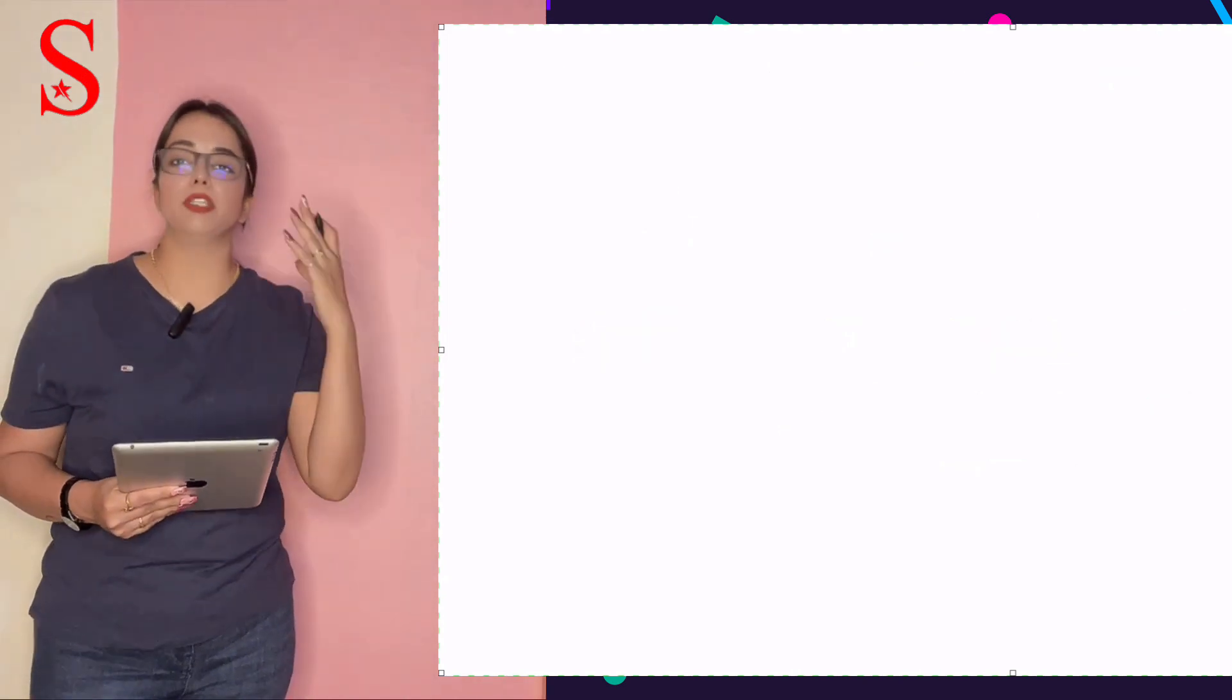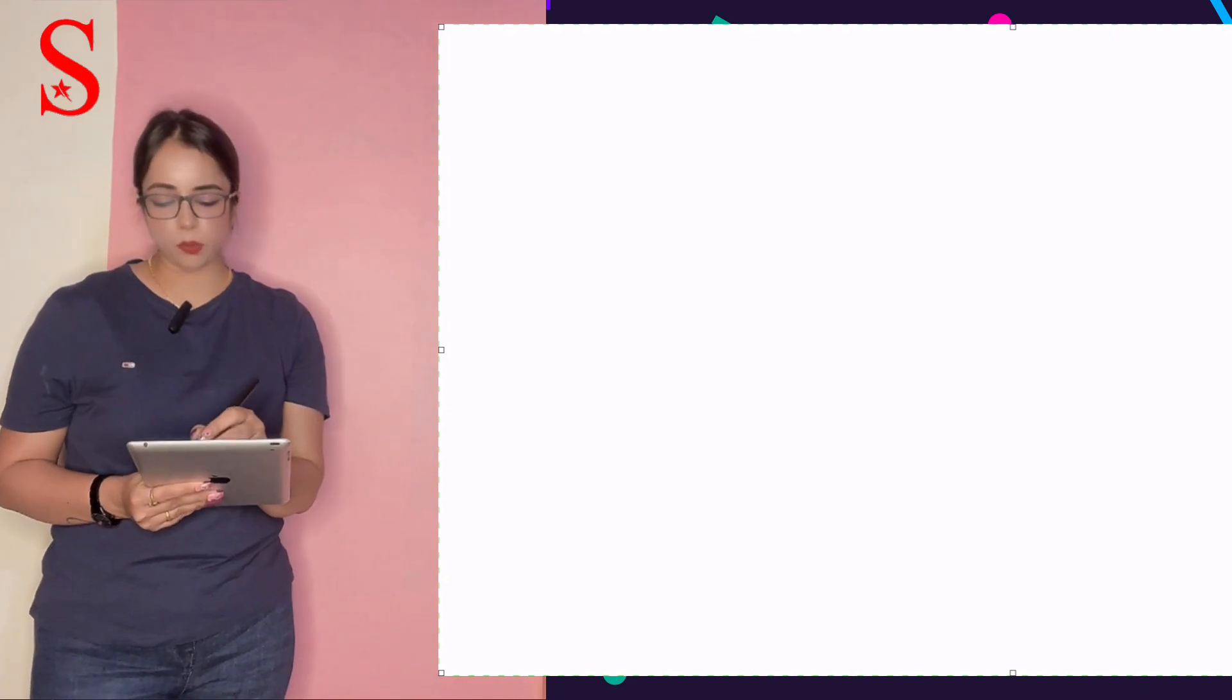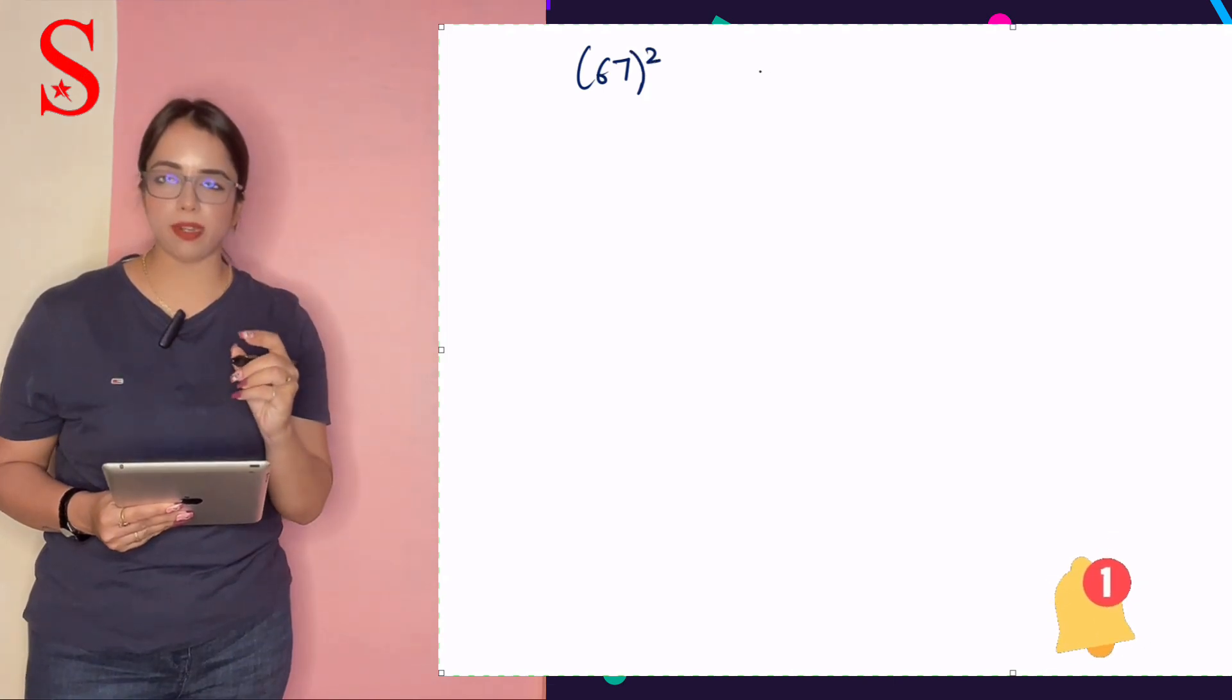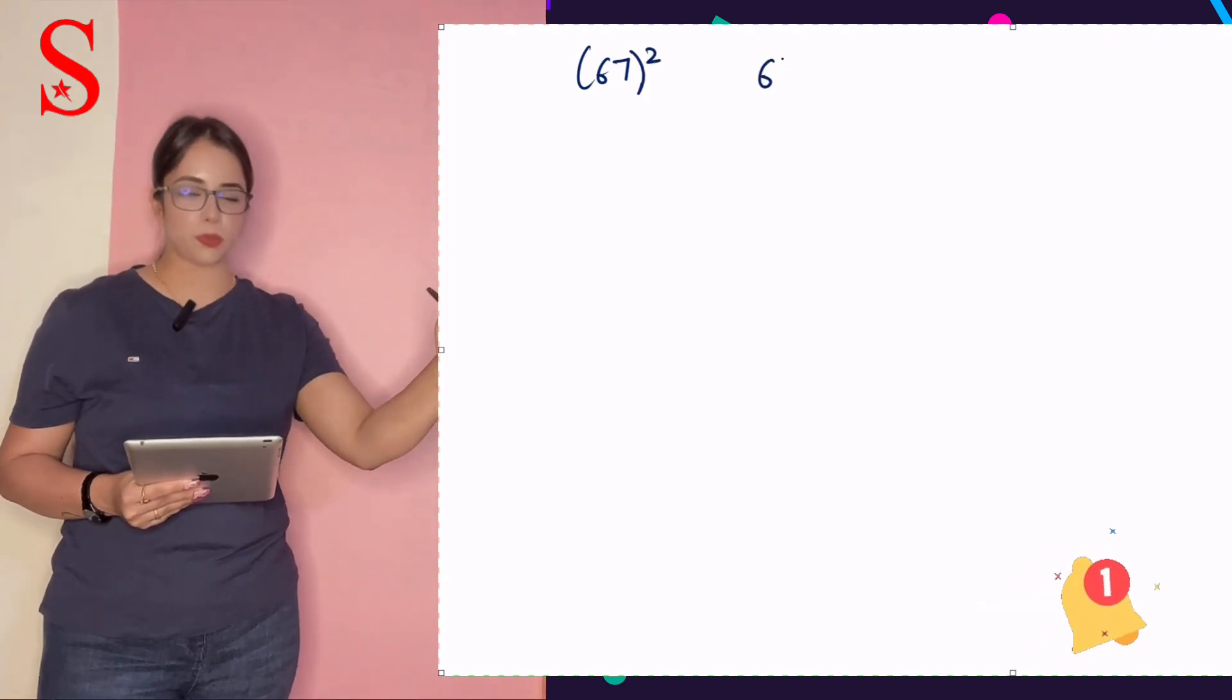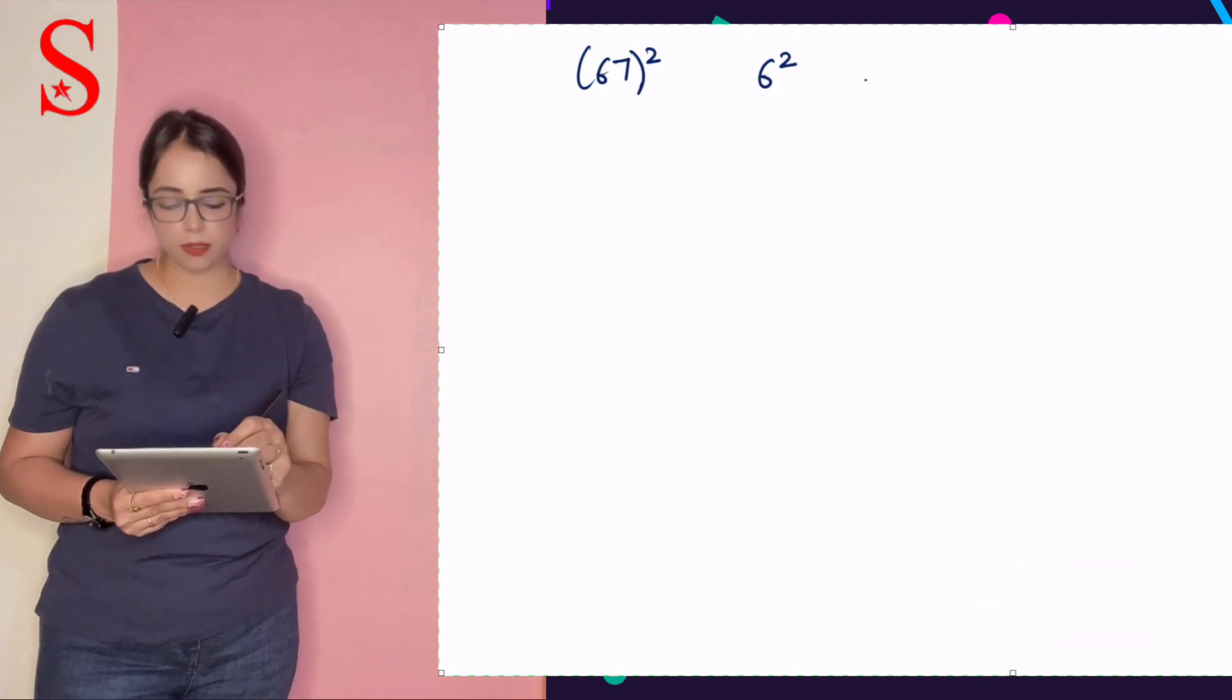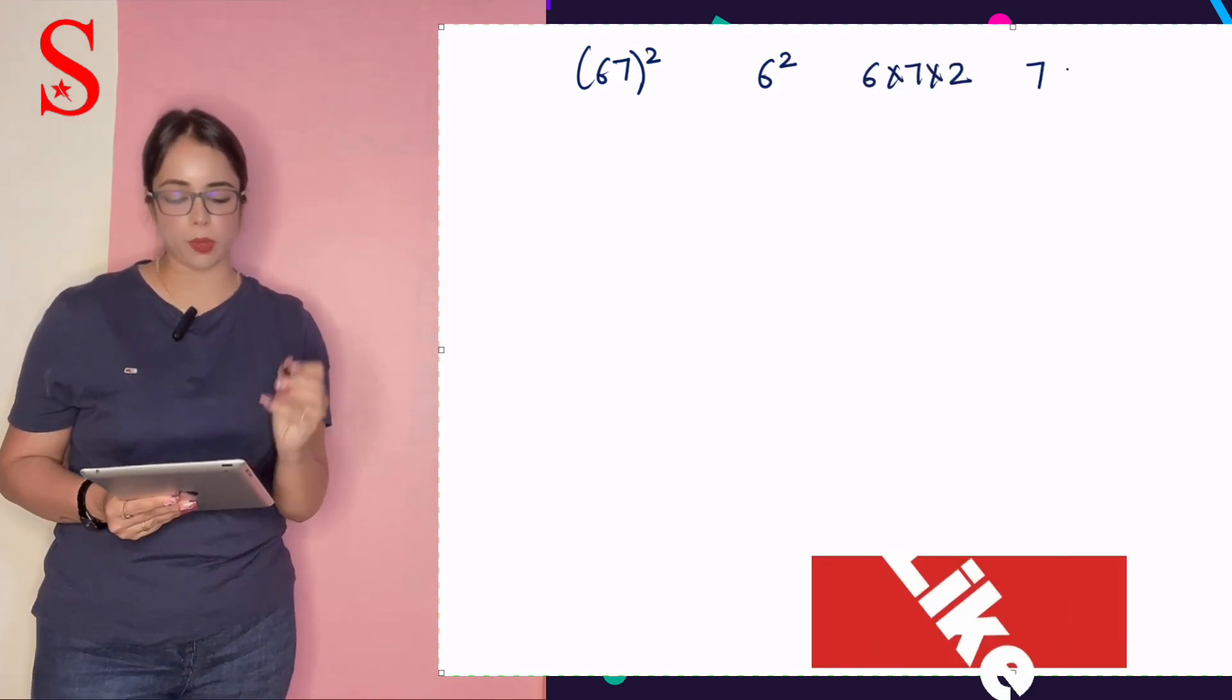This is a fantastic technique using which you can calculate the square of any 2-digit number orally. Now, we'll practice the question orally. Question is what is the square of number 67? 67 square is 6 square, 7 square, 6 into 7 into 2. Let's write. 6 square, 6 into 7 into 2 and 7 square.